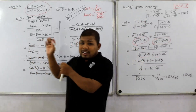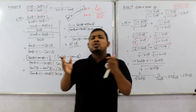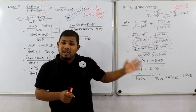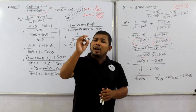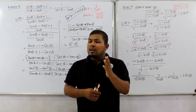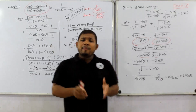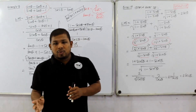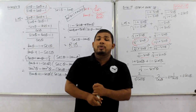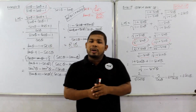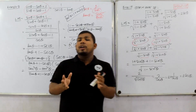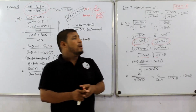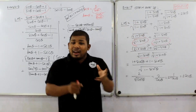In this video we have solved trigonometric questions from exercise 8.4. The key formulas used here are: a squared minus b squared equals a minus b whole into a plus b; a plus b whole squared; a minus b whole squared; a cubed minus b cubed; a cubed plus b cubed; a plus b whole squared equals a squared plus b squared plus twice ab; and sin squared theta plus cos squared theta equals 1.